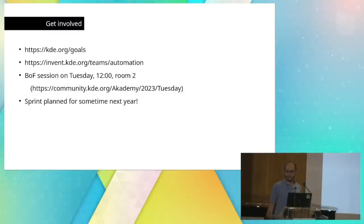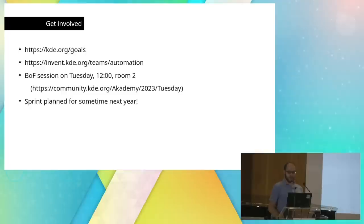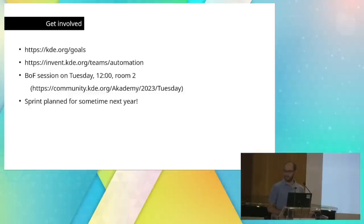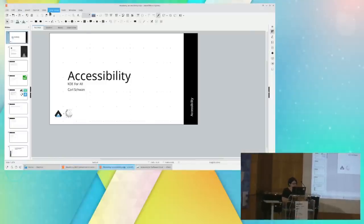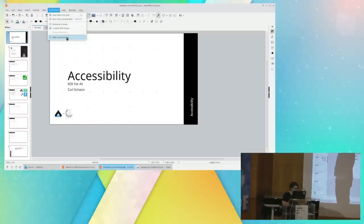If any of this sounds interesting, you can get involved. I'm the goal champion — Nate at kde.org. There's also kde.org/goals with information about all the goals including the automation goal. We have a team on Matrix you can join, a BoF session at noon on Tuesday, and a sprint planned for sometime next year. Thank you all for listening. We now move on to accessibility with Carl.